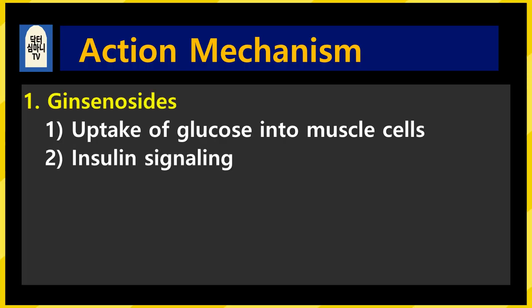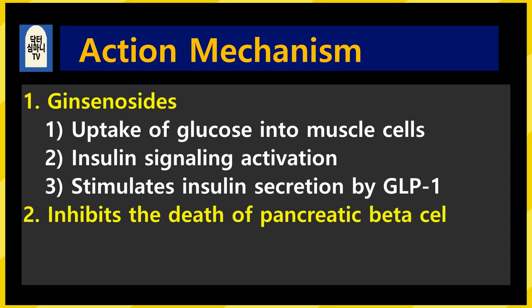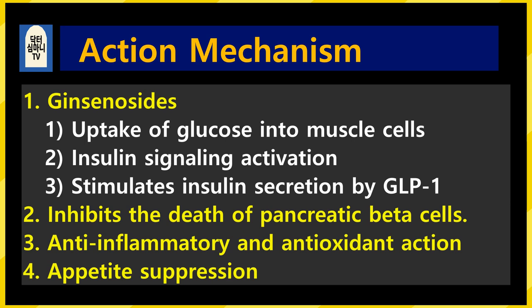Looking at the mechanisms of treatment. 1. Ginsenoside moves glucose in the blood into the muscle cells and activates the insulin signal. In addition, by increasing the production of GLP-1 (glucagon-like peptide-1), it stimulates insulin secretion. 2. It protects against the death of pancreatic beta cells. 3. Anti-inflammatory and antioxidant action. 4. It has an appetite suppression effect.